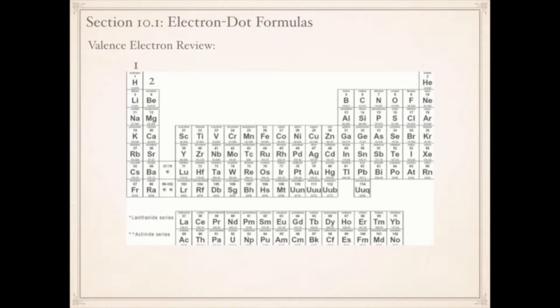Then we're going to skip over the transition metals to the group with boron. That would be three, four, five, six, seven, and eight valence electrons.